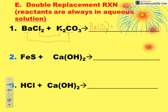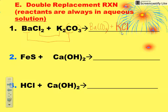Now potassium and chlorine come together. Remember to put potassium first in the formula because metals have to come first. K and Cl — that gives you KCl. Positive one for potassium, negative one for chlorine, charges cancel. Now you're ready to balance the skeleton equation.